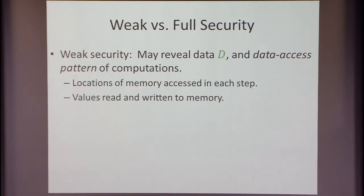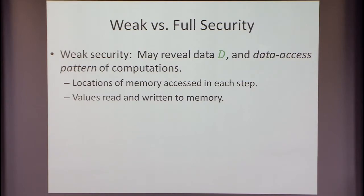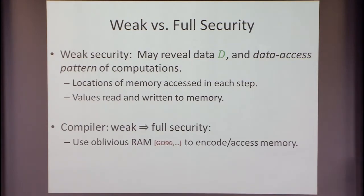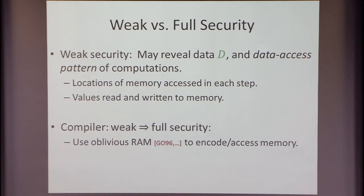We can relax security a little bit. We'll look at a weaker security where it's okay if the garbled program reveals the contents of the data and even the data access pattern — we're not going to hide those. But that's the only thing you learn. You don't learn anything else about the program other than its data access pattern and the data it's accessing. That sounds weaker, but it's good enough: if you can do this, you can get the full thing. How? Just compile the program with oblivious RAM, and even if you see the data access pattern of the compiled program, you don't learn what the original program was doing.